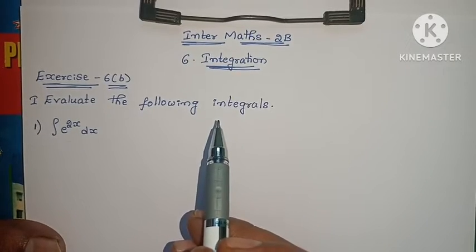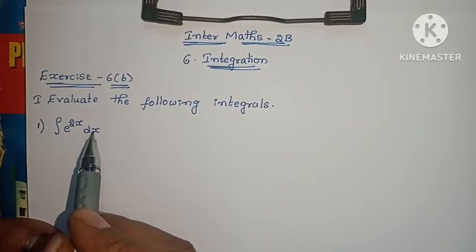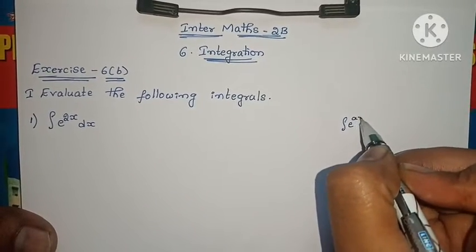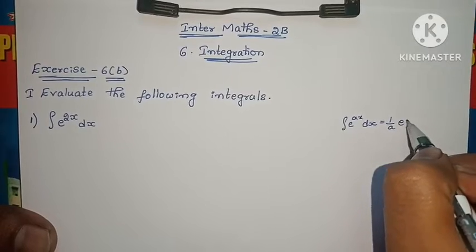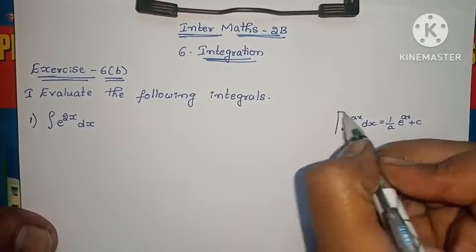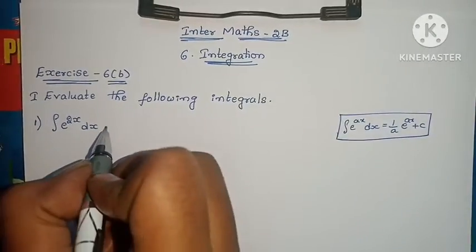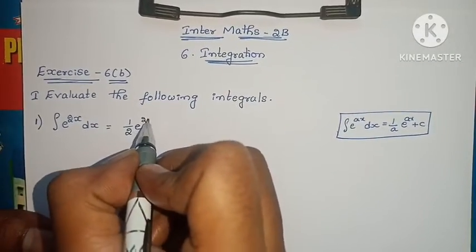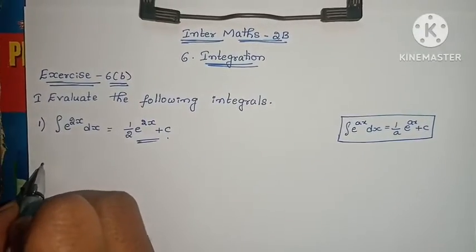Evaluate the following integrals. The first one: integral of e^(2x) dx. As we learned in the last video, integral of e^(ax) dx equals 1/a · e^(ax) + c. Using this formula, here a equals 2, so the answer is 1/2 · e^(2x) + c. The problem is complete.